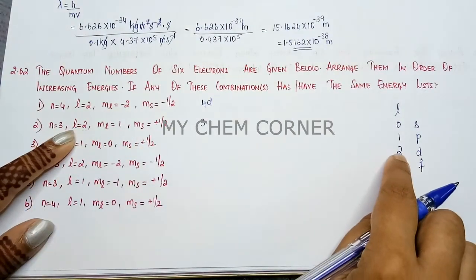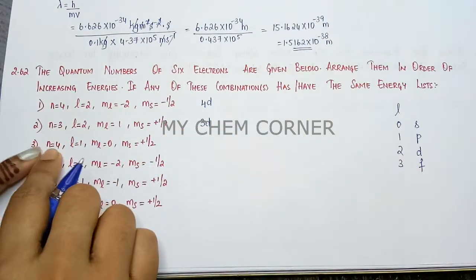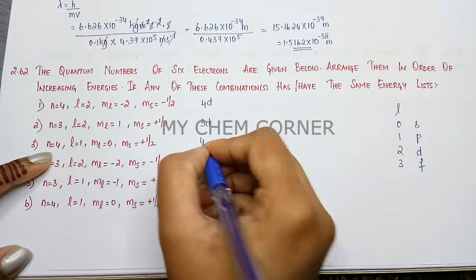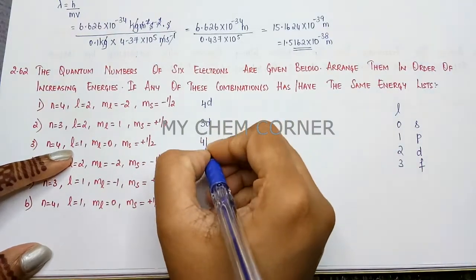Then we have n = 4, l value is 1. So when l is 1, it is p orbital, so this is 4p. Next is n = 3, l = 2. When l = 2, it's d.